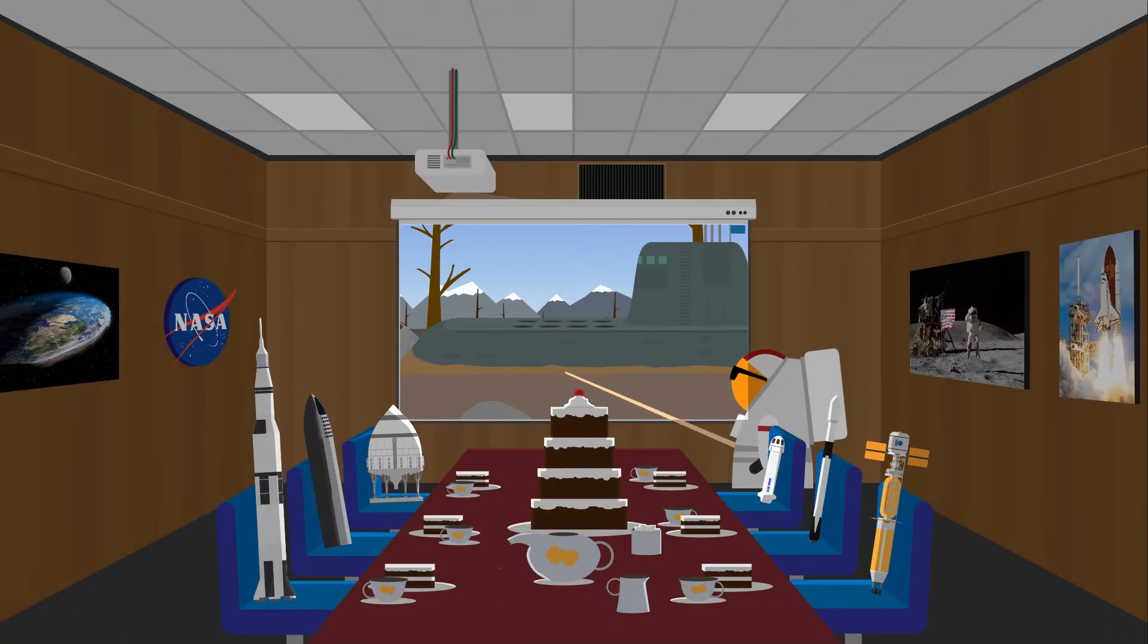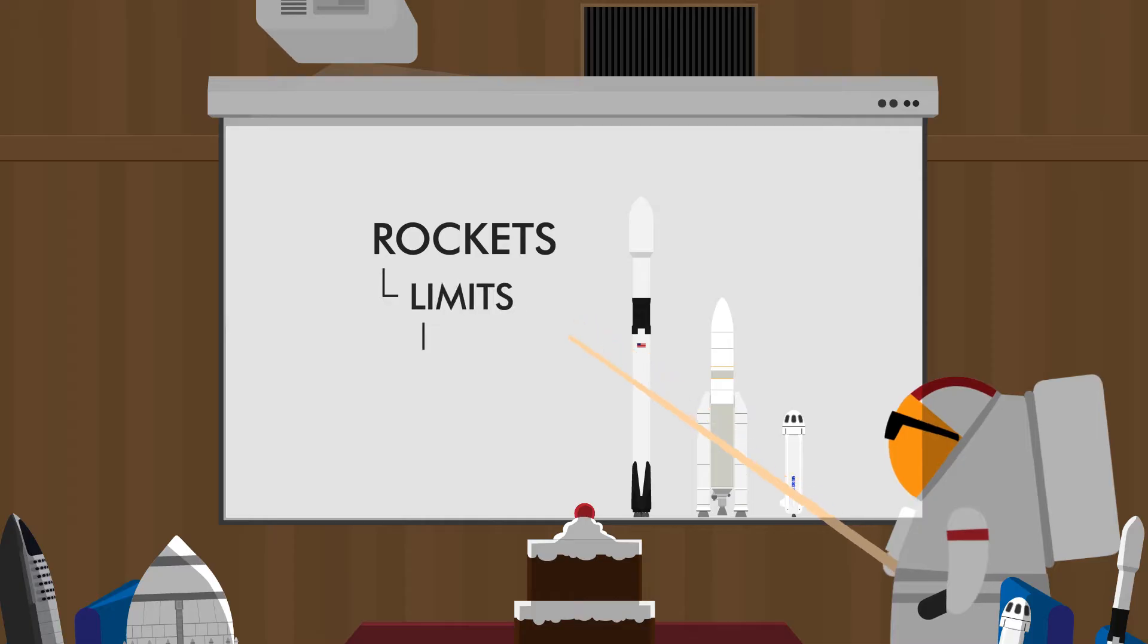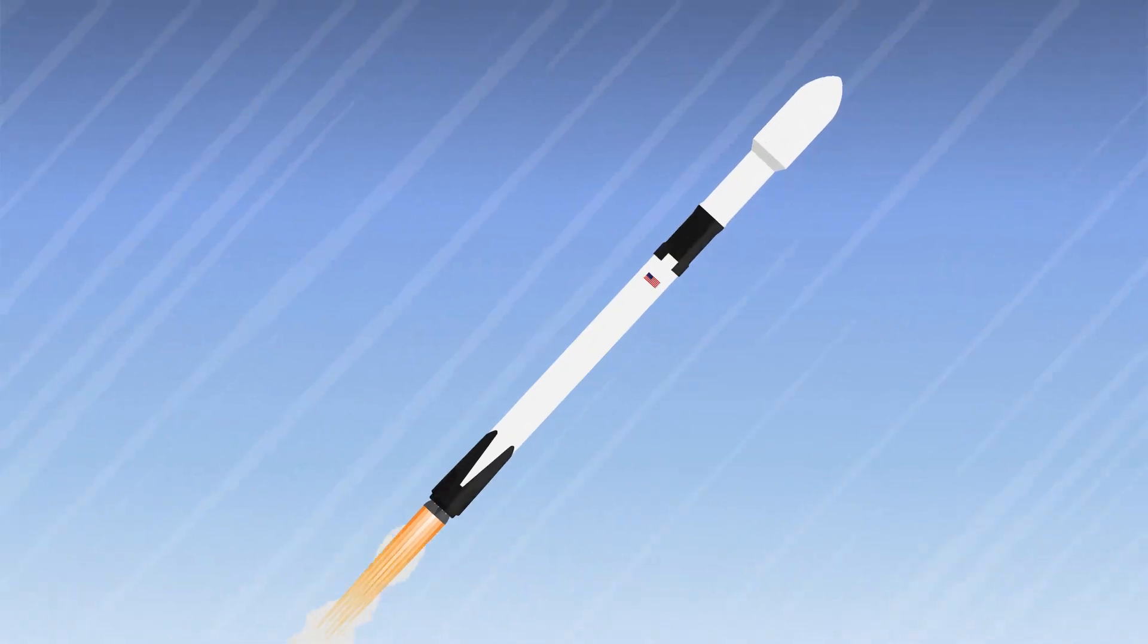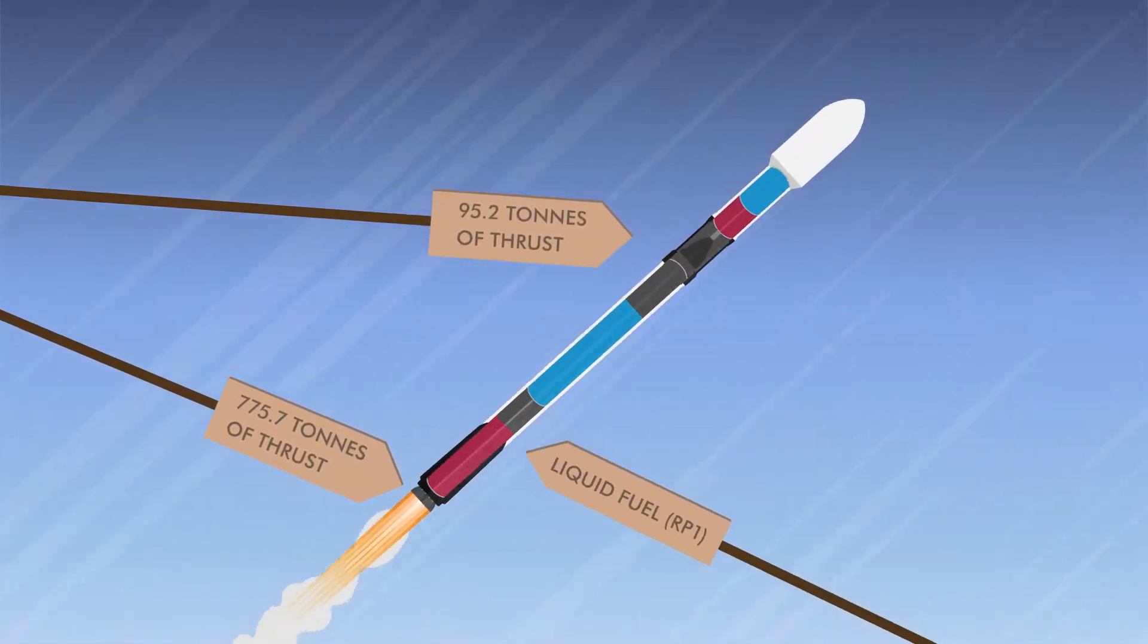But more about that later. Because first we have to talk about rockets, specifically their limits: weight and volume. The weight a rocket can shoot up into orbit is limited by the power of the rocket's engines and by the amount of fuel the rocket has.